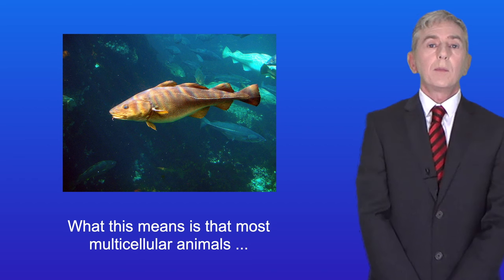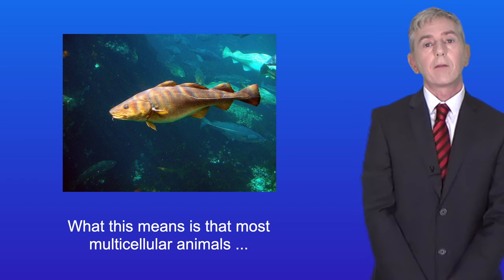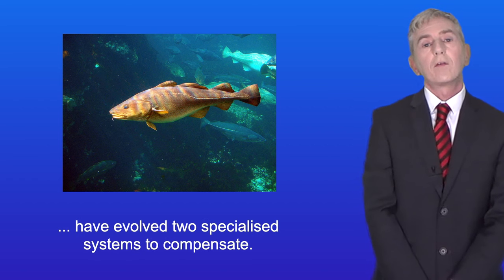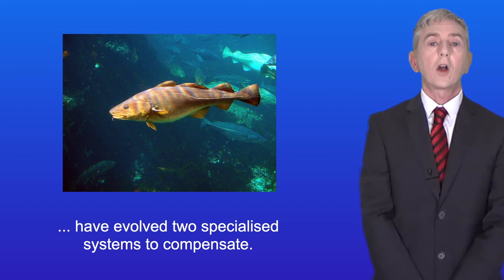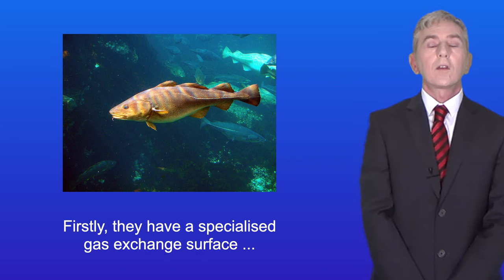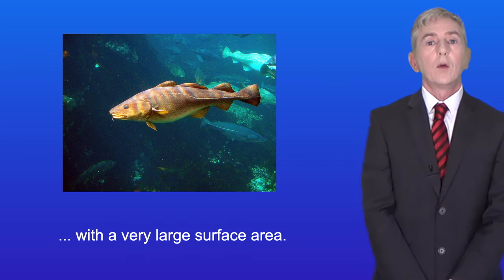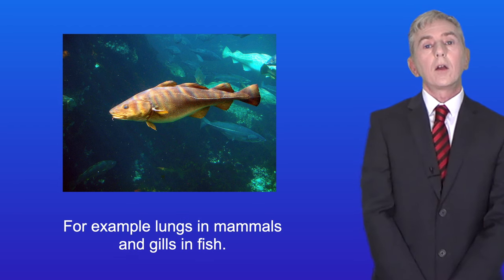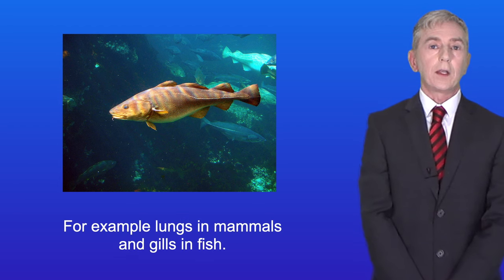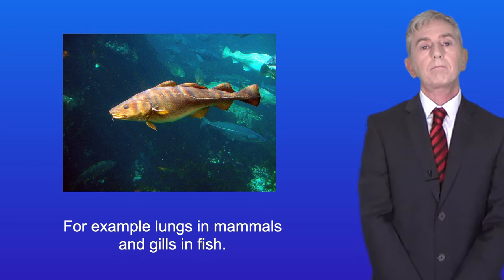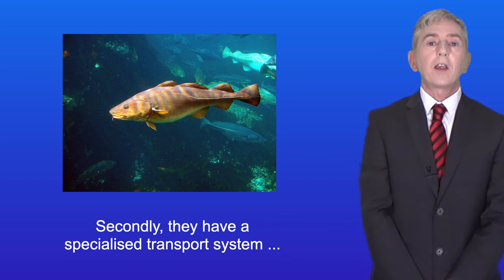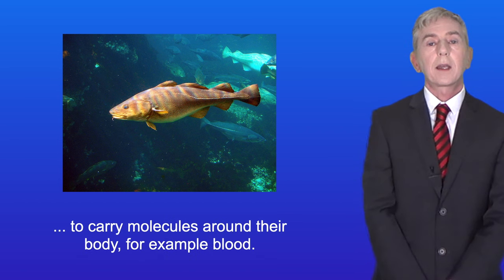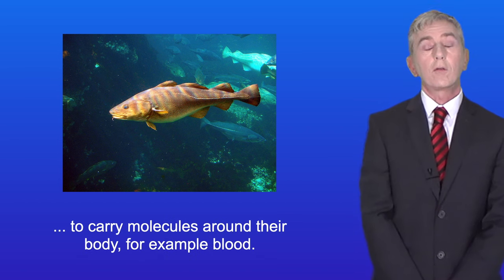Most multicellular animals have therefore evolved two specialized systems to compensate. Firstly, they have a specialized gas exchange surface with a very large surface area — for example, lungs in mammals and gills in fish. Secondly, they have a specialized transport system to carry molecules around their body — for example, blood.